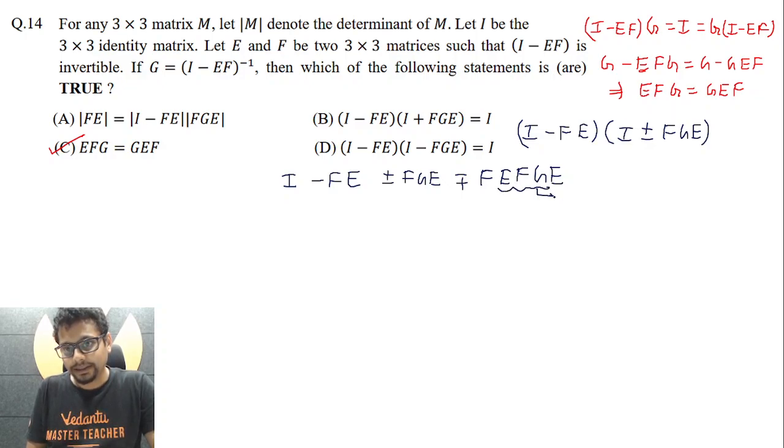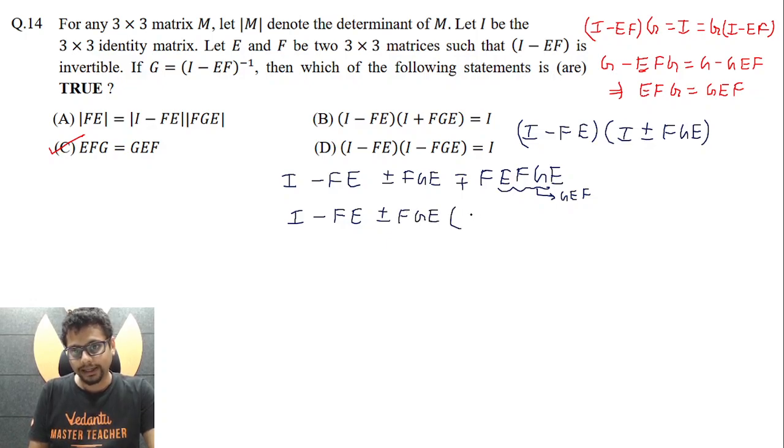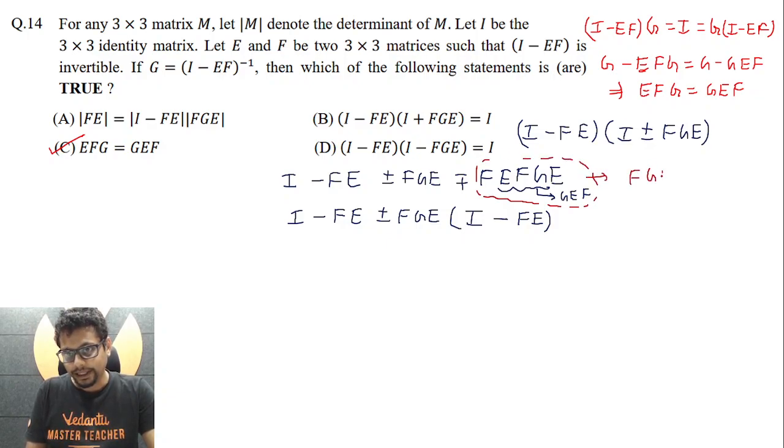So here EFG is same as GEF. So I can take FGE common; it becomes I minus FE plus minus, if I take FGE common I get (I - FGE) has been taken common. So what I am left with is FE. When I take plus minus FGE common it becomes I and since instead of plus minus here it is minus plus, so when I take plus minus common then it becomes minus. So I minus FE.